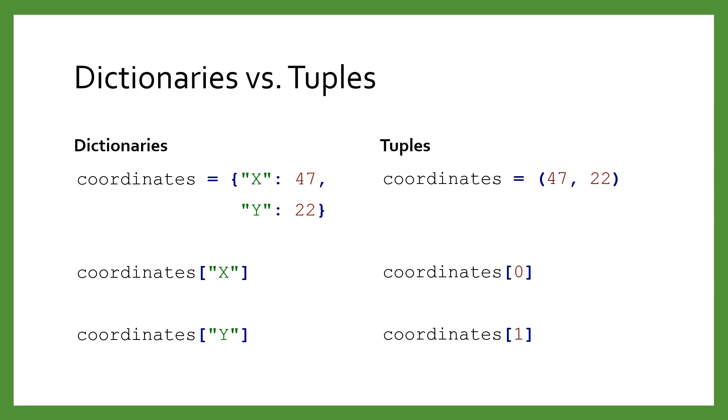Tuples are actually very similar to dictionaries used as records in their own way. Instead of using string keys, they use a numeric index. This is a trade-off. The meaning of the tuple indexes are less clear, but they are more concise than dictionary keys.